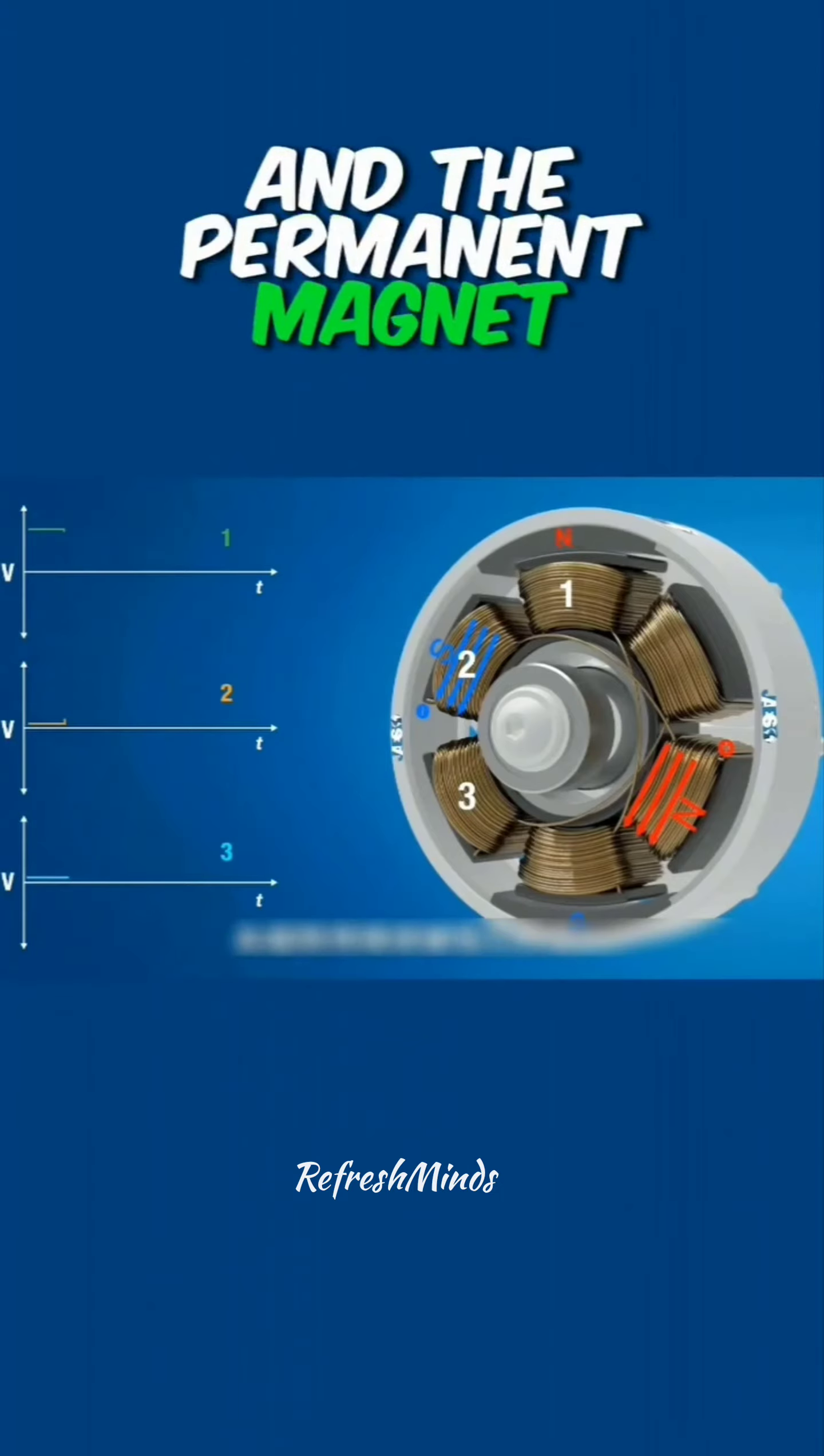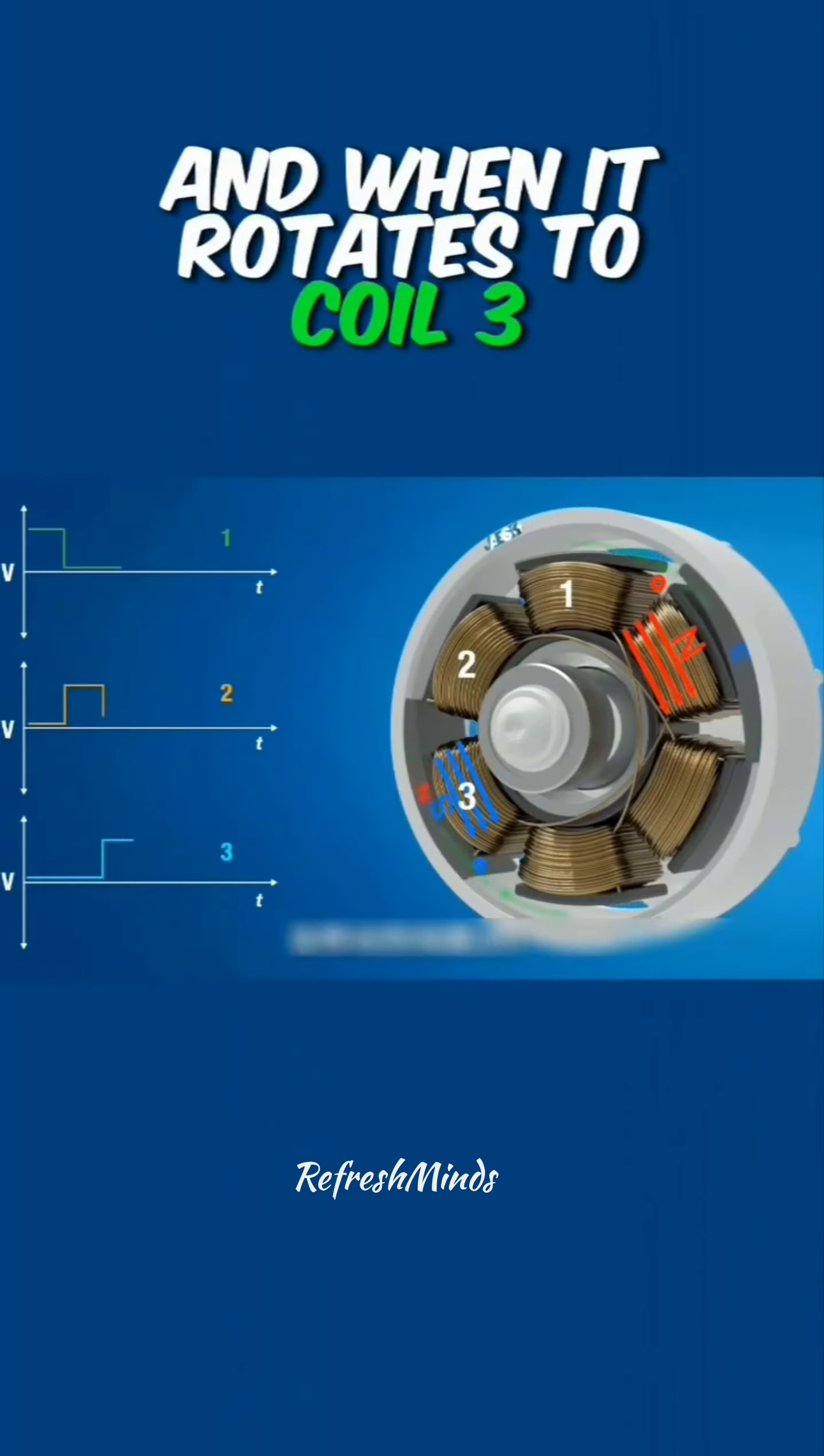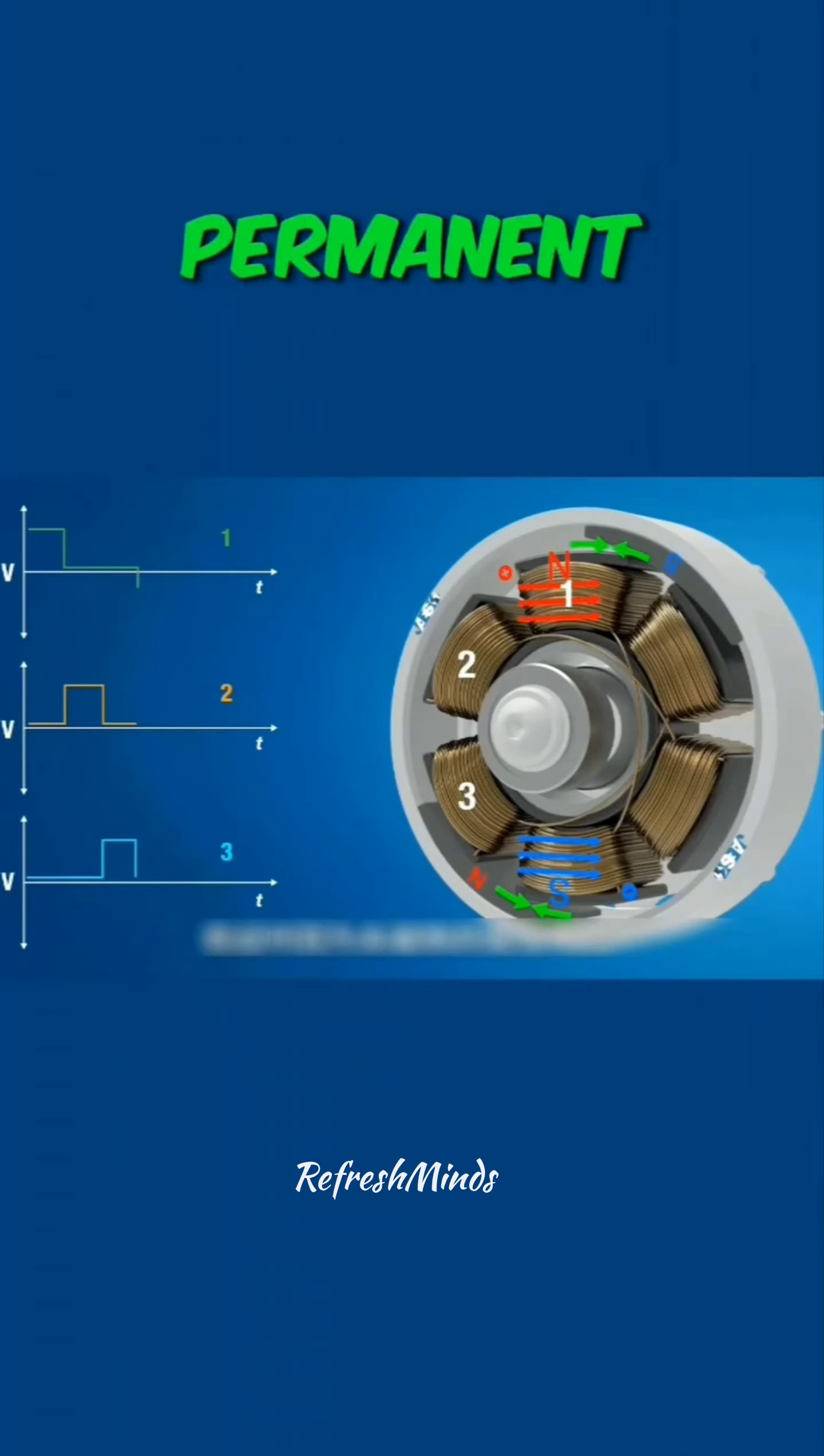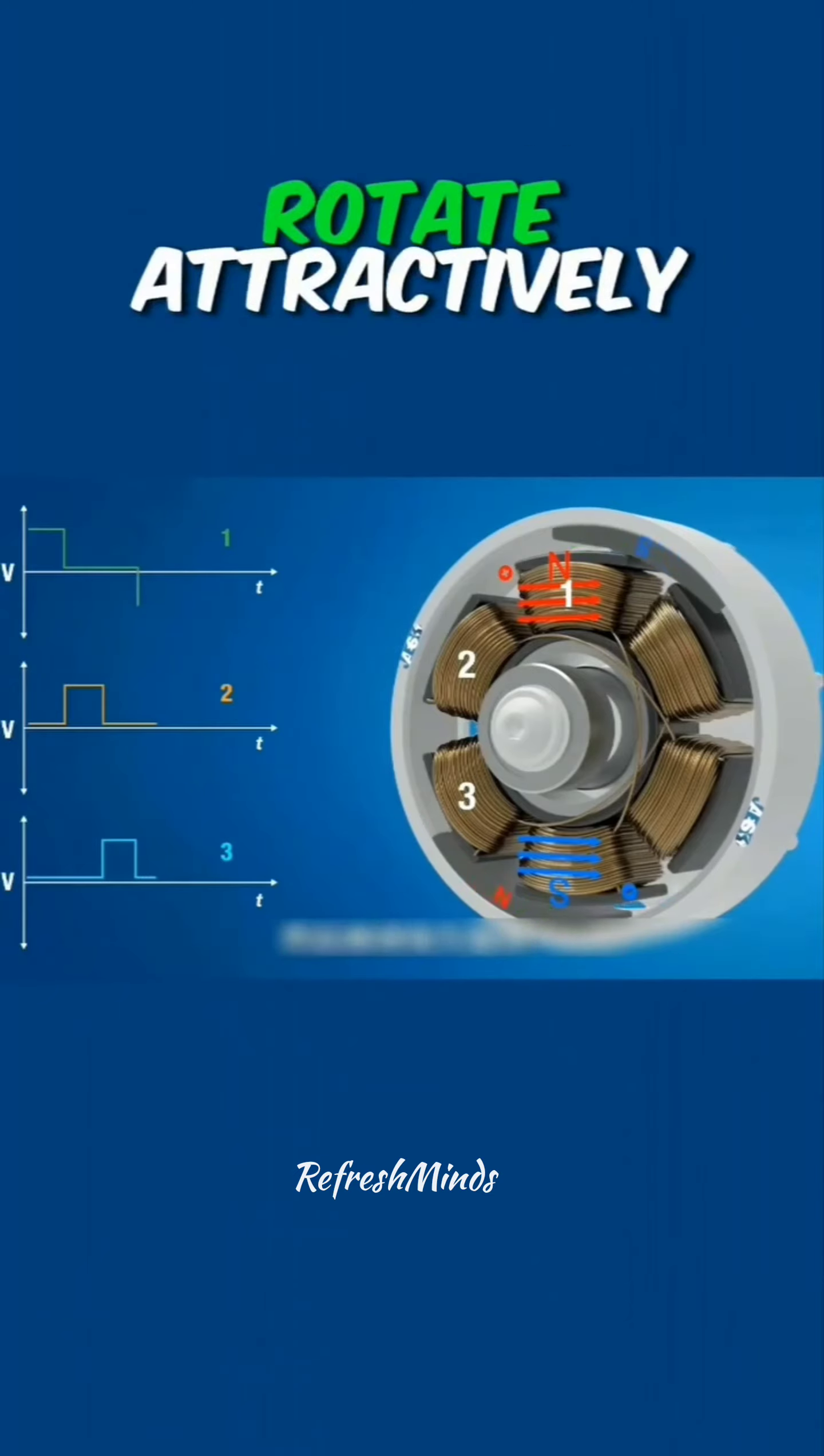Then coil 2 is de-energized, and coil 3 is energized, and when it rotates to coil 3, coil 1 is energized. But at this point, because the polarity of the permanent magnet is different, the current to coil 1 is going to be in a different direction and then continue to rotate attractively.